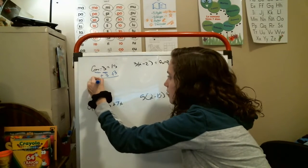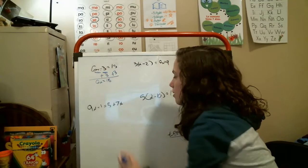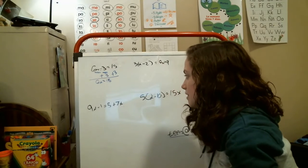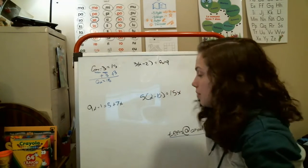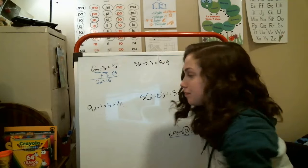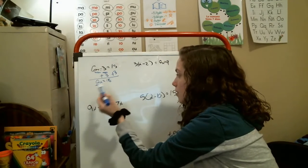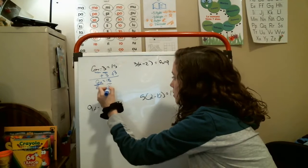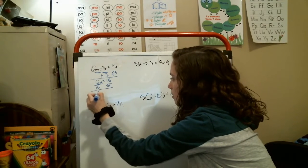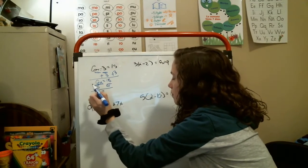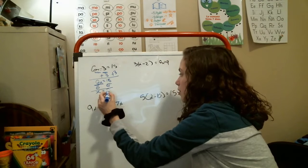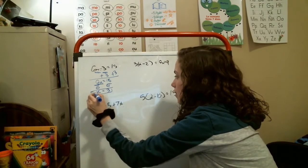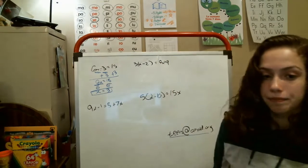That means you have 6x equals 18 here. At the end of all of these equations that I'm going to show you today, you have to divide this x value on both sides to get that x alone. You divide 6 here and divide 6 here to get your x alone. The x value equals 3 here. That is a very simple, basic equation.